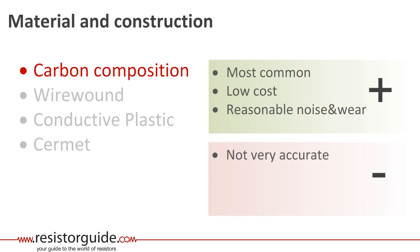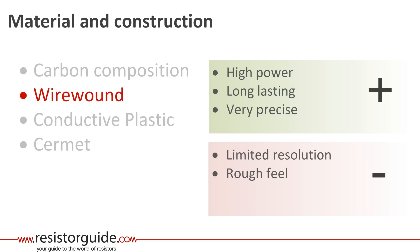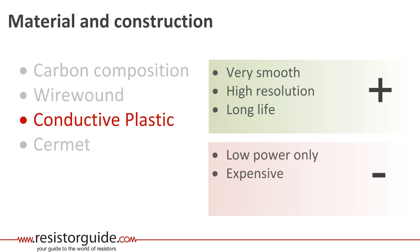For the resistive element, different materials can be used. Carbon composition is most common, has a low cost, and a reasonable noise and wear, but on the downside they are not very accurate. The wire wound can handle high power, is durable and long-lasting, and can be very precise. They are often used in high power applications, but the drawbacks are the limited resolution and the rough feel. Conductive plastic has a very smooth action, the highest resolution and long life. Unfortunately, they handle only low power and can be expensive. They are often used in high-end audio applications.